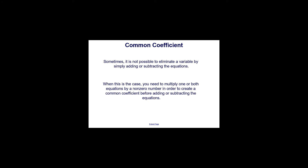Sometimes it is not possible to eliminate a variable by simply adding or subtracting the equations. When this is the case, you need to multiply one or both equations by a non-zero number in order to create a common coefficient before adding or subtracting the equations. Let's take a look at a system where this is necessary.